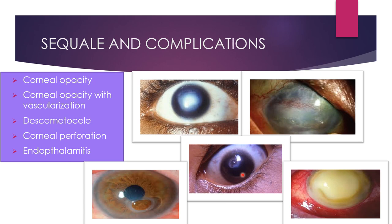If the ulcer penetrates deeply, it may lead to necrosis of the stroma and cause the Descemet's membrane to protrude, leading to descematocele. At this stage, the cornea is threatened to perforate. If not controlled, the cornea may perforate, the anterior chamber collapses, and aqueous leaks out. Sometimes the perforated corneal ulcer allows organisms to enter the eye, leading to the devastating condition of infective endophthalmitis, in which the whole eyeball gets infected and patients usually end up with loss of vision.